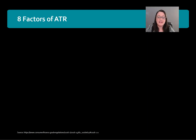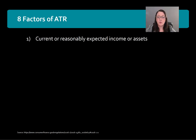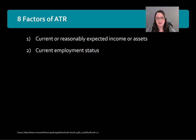Let's take a look at the eight factors that lenders and underwriters must take into consideration when underwriting a loan under the ATR rules. Factor number one: they have to review the current or reasonably expected income or assets of the borrower — does the borrower have the income and assets to support the payments? Assets cannot include the subject property. Next is current employment status: do they meet the program standards, are they reasonably employed, and does it look like their employment will continue and remain stable?